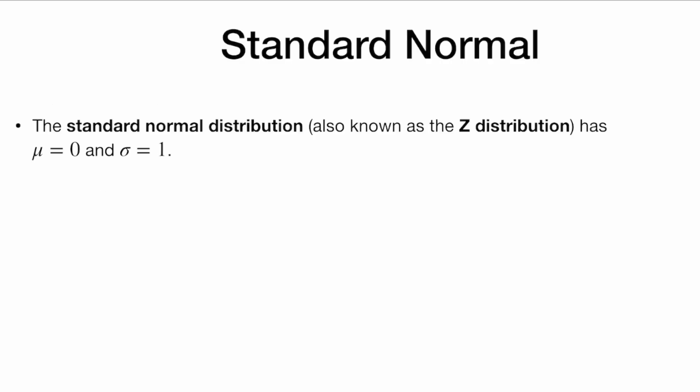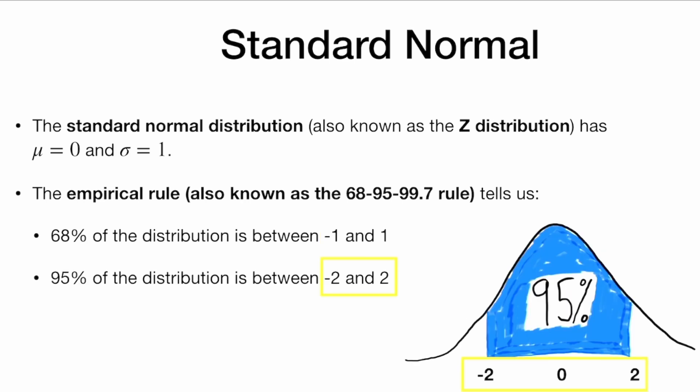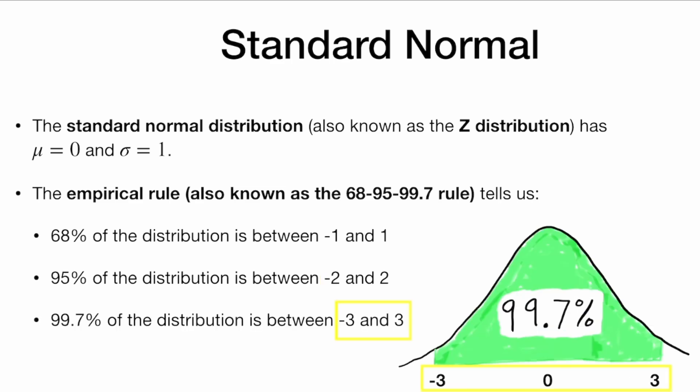Let's take a look at a particular example of a normal distribution called the standard normal distribution. A standard normal distribution, also known as a z-distribution, has mean zero and standard deviation one. The empirical rule — the 68-95-99.7 rule — tells us that 68% of the distribution is between negative one and one, 95% of the distribution is between negative two and two, and 99.7% of the distribution is between negative three and three.